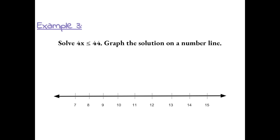Example 3: solve 4x is less than or equal to 44, and graph the solution on a number line. So 4 is being multiplied by x, so I'm going to do the inverse and divide by 4. 4 over 4 can be cancelled out and we're left with x is less than or equal to 11.